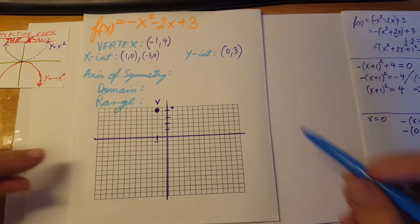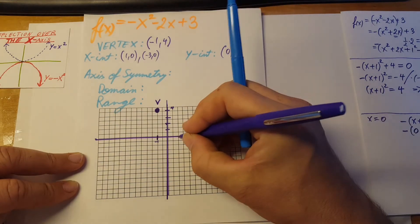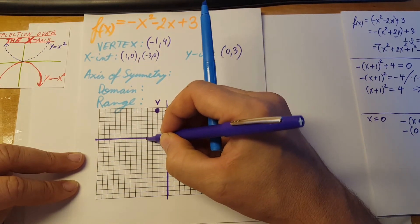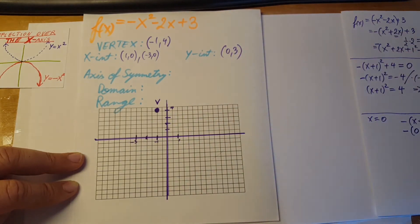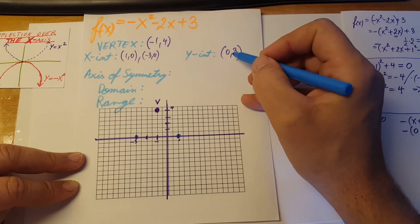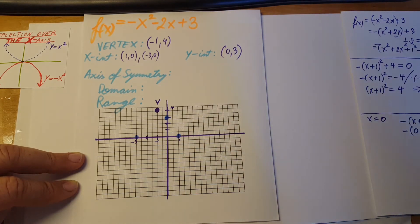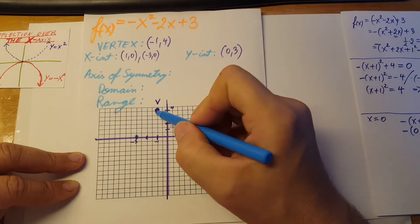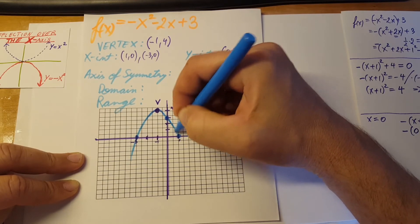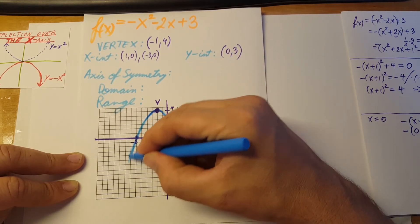We're going to have an x-intercept at (1, 0), right here, and our other intercept is at (−3, 0). The y-intercept is at (0, 3). Now we know roughly our parabola's shape — it's going to open downward, respecting the vertex and the intercepts we found. There's our rough shape.